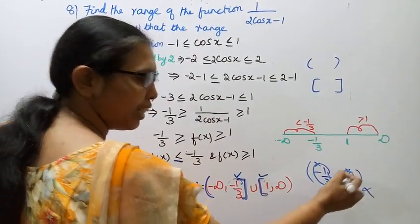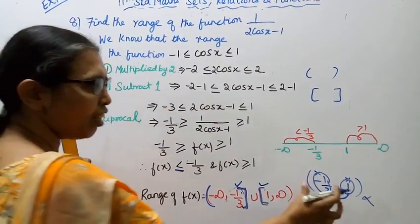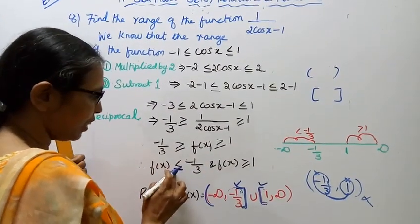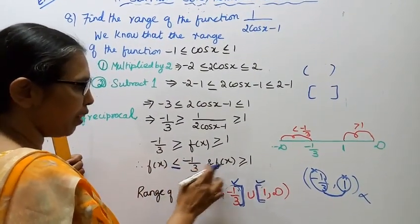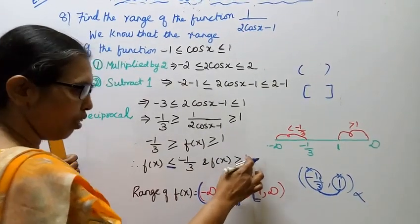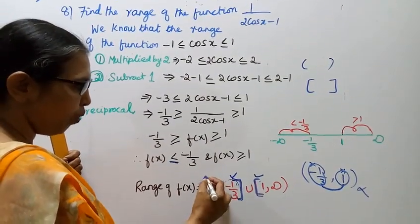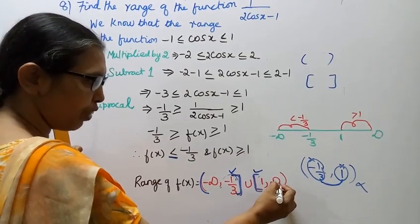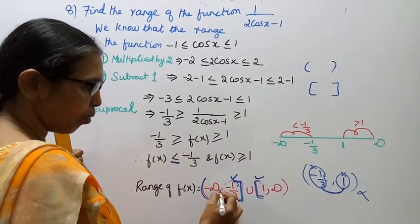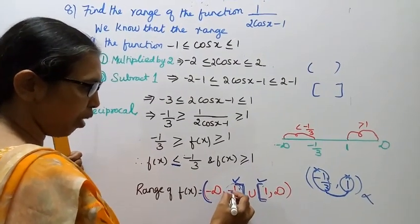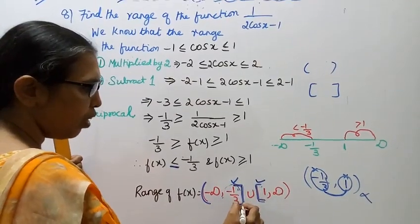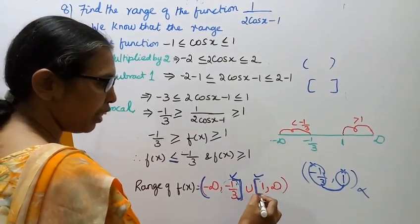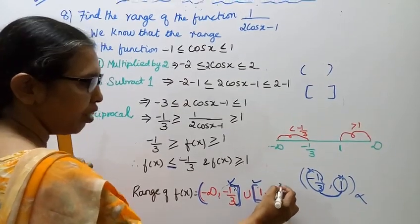The values in between -1/3 and 1 do not come in the range. So, the values less than or equal to -1/3 and greater than or equal to 1 are included. Therefore, the range is (-∞, -1/3] union [1, ∞). Minus infinity to -1/3 closed, union 1 closed to infinity open.